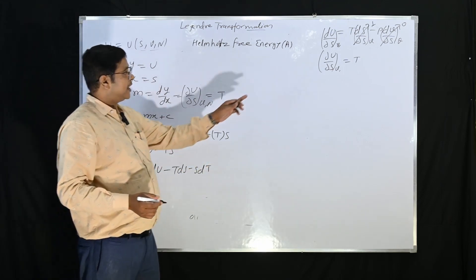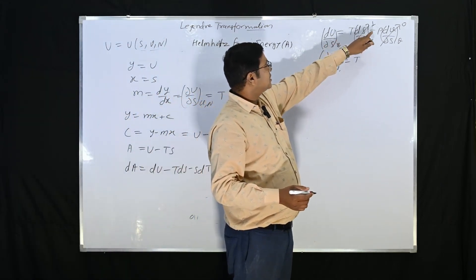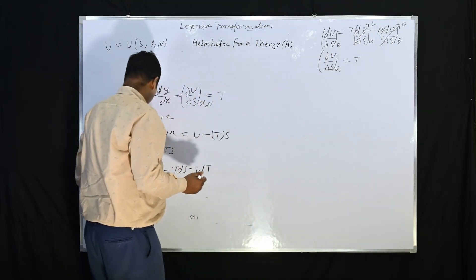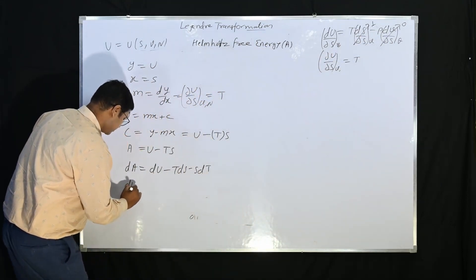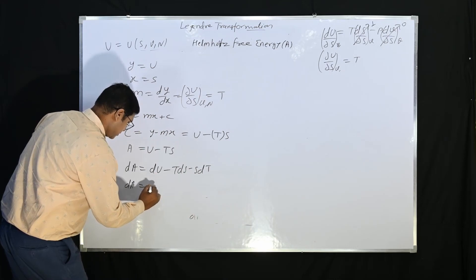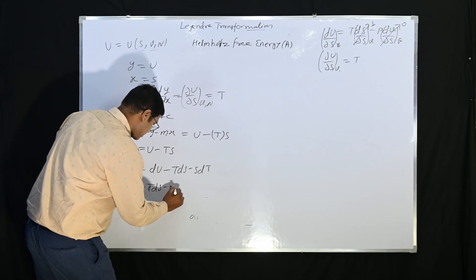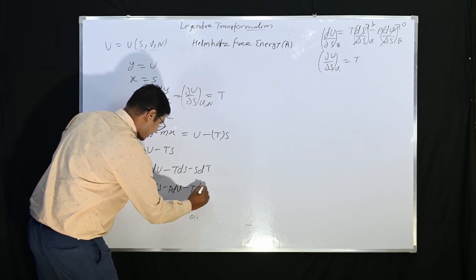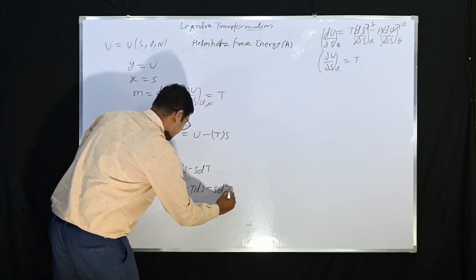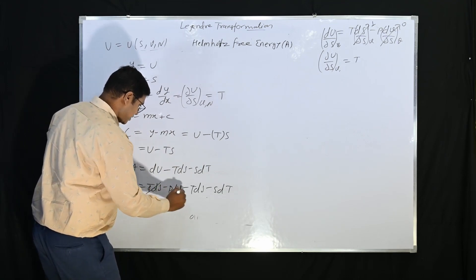Once again we know that dU is equal to TdS minus PdV. So TdS minus PdV minus TdS minus SdT.